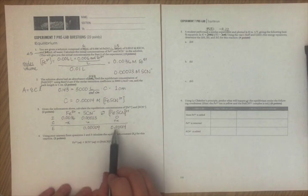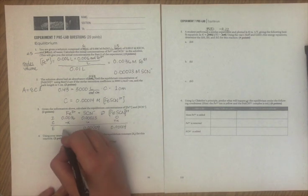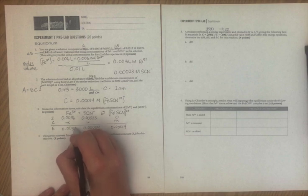So we get 0.0036 minus 0.0014, we get 0.0035.